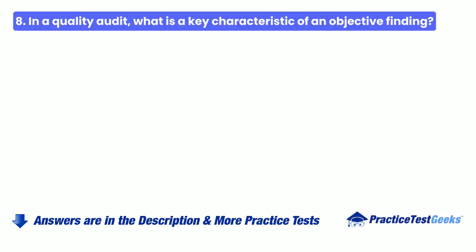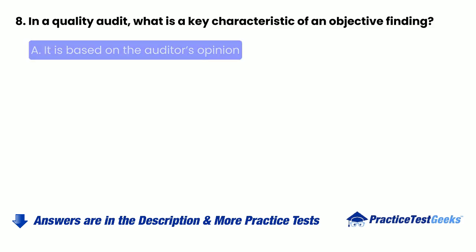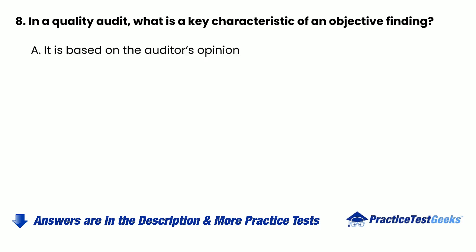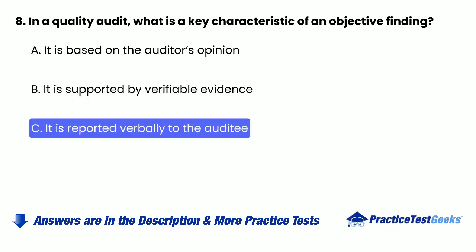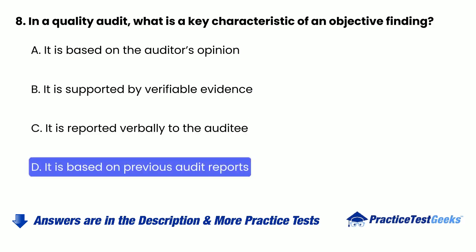8. In a quality audit, what is a key characteristic of an objective finding? a. It is based on the auditor's opinion. b. It is supported by verifiable evidence. c. It is reported verbally to the auditee. d. It is based on previous audit reports.